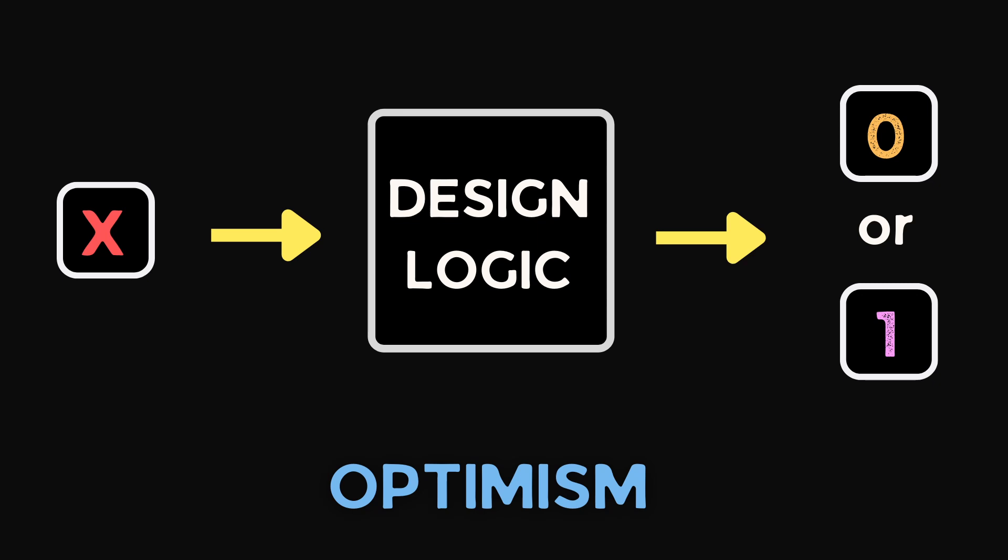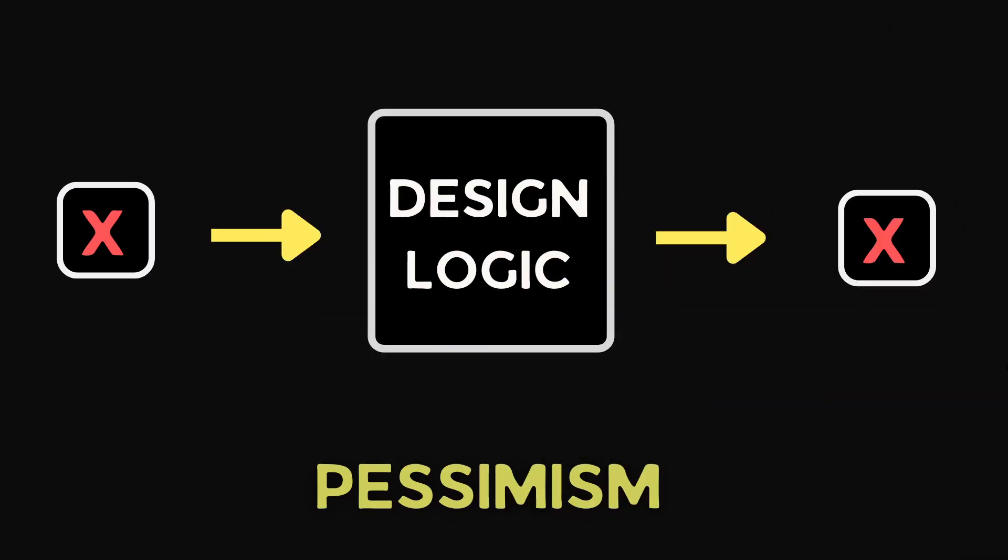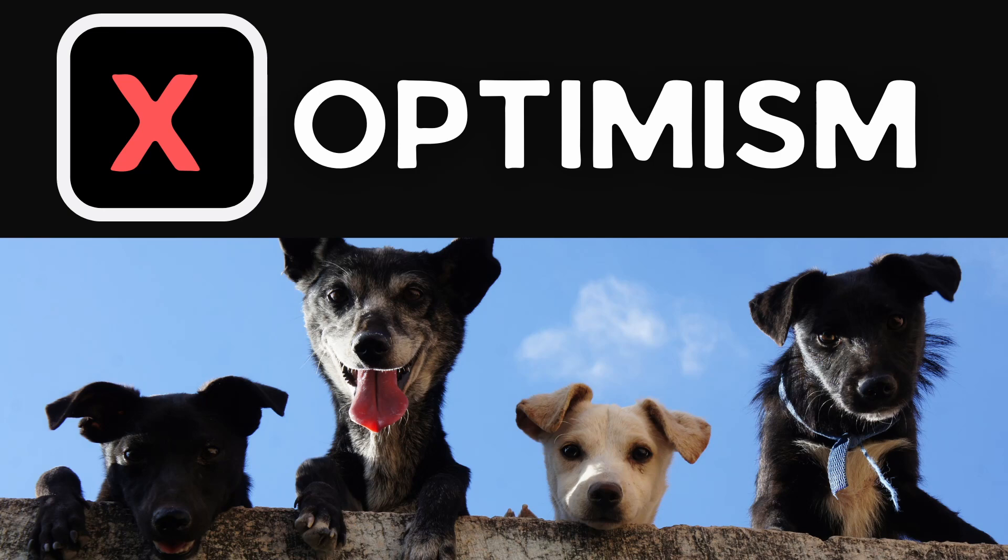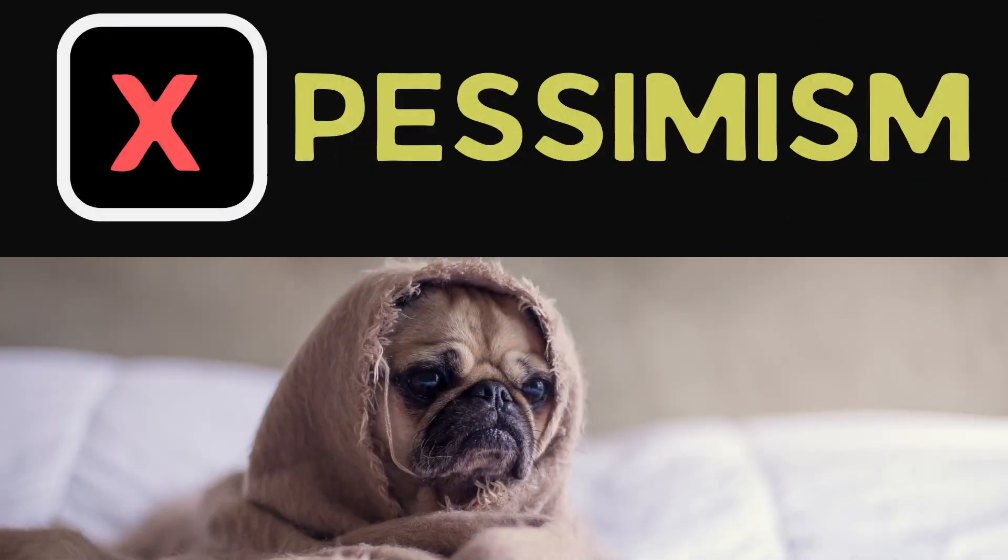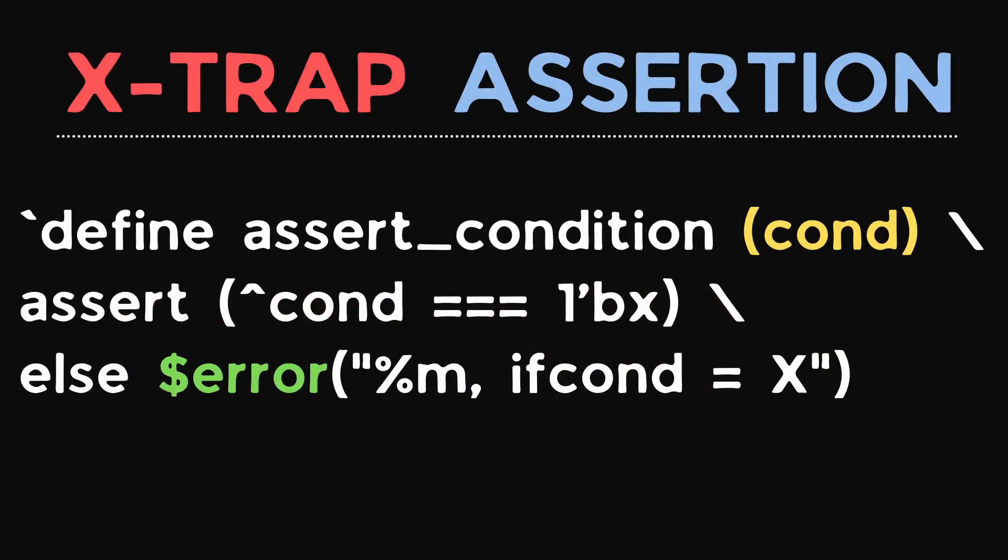X-optimism results in X values propagating as 0 or 1 value to the downstream logic and potentially hiding the design problems. Whereas X-pessimism results in all X value propagation to the downstream logic and potentially causing the simulation problems that would not exist in actual silicon. The best way is neither X-optimism or X-pessimism. The best way is to detect X at the point of occurrence and this can be done by using SystemVerilog immediate assertions.